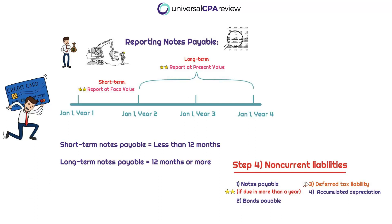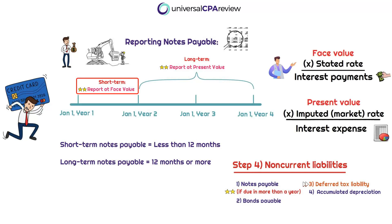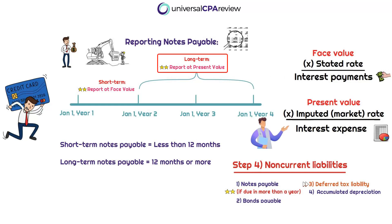Short-term notes payable need to be reported at their face value, whereas long-term notes payable will be recorded at their present value. The face value is the total dollar value stated by the issuer — when you're thinking face value, you're thinking about the interest payments, and the total interest payments will amount to the total payment value of the liability. The present value is more closely related to the total interest expense associated with the liability, and is also considered the carrying value. Long-term notes payable are recorded at present value.